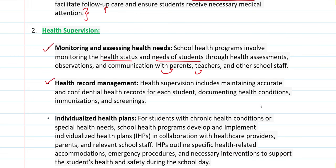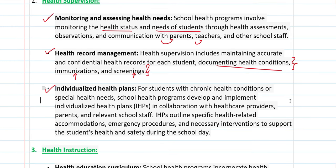That comes to health record management. In health supervision, they maintain accurate and confidential health records for each student — documenting their health conditions, immunizations, and screening results. In some schools, individualized health plans are developed. If a student has a chronic condition or a special need, a specially tailored health program is developed, involving parents and school staff.